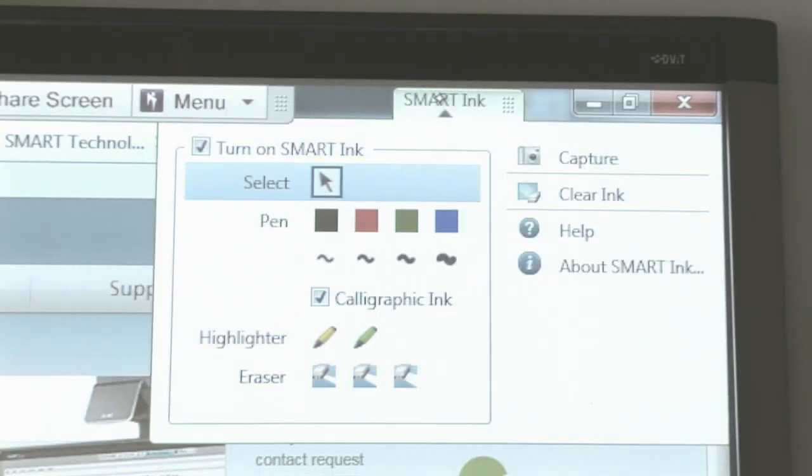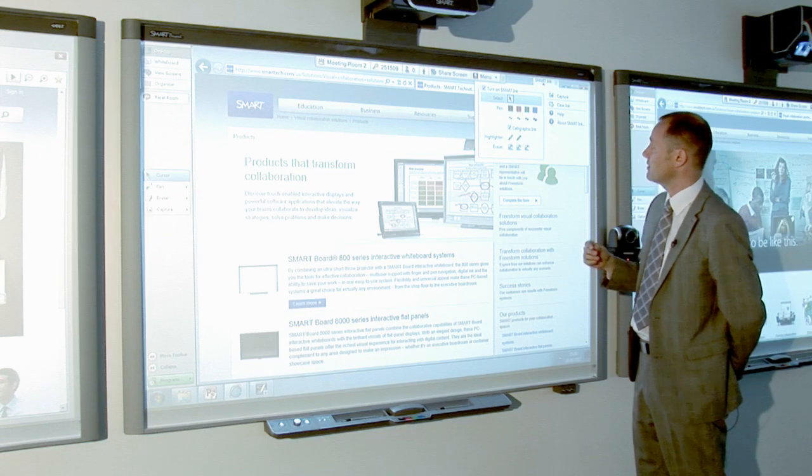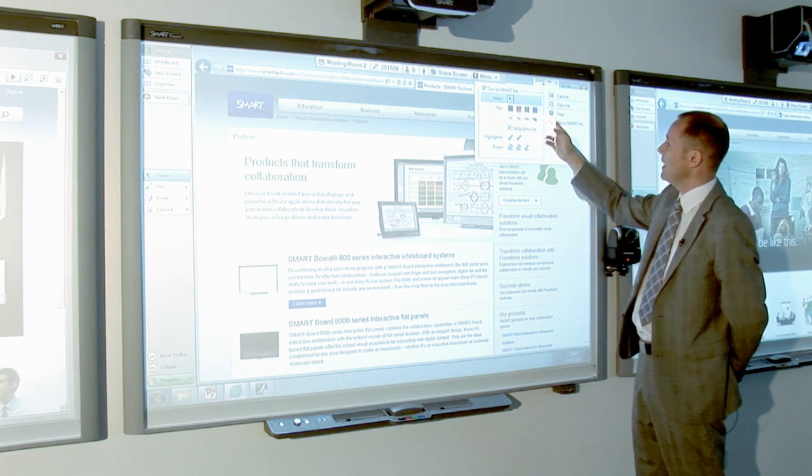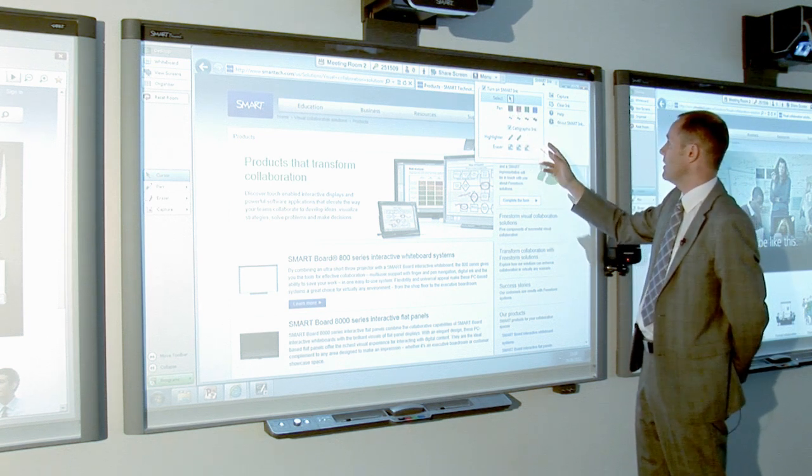If I click on the arrow there, you'll see the toolbar open up. At the moment, we can see that the ink is turned on, and we have a number of pens to choose from, highlighters, erasers.